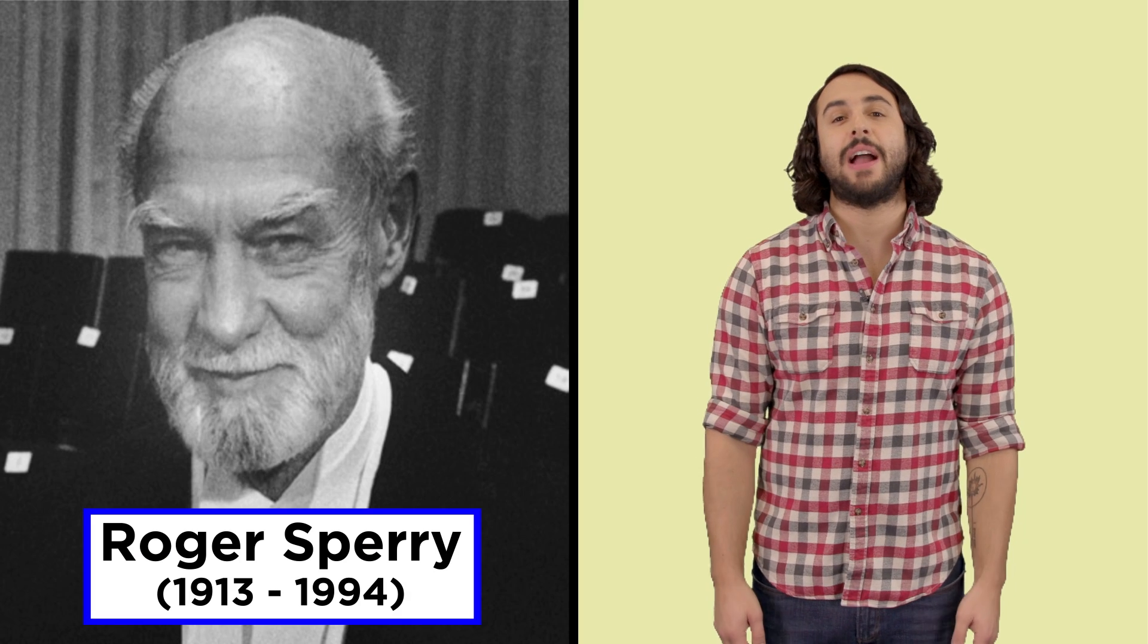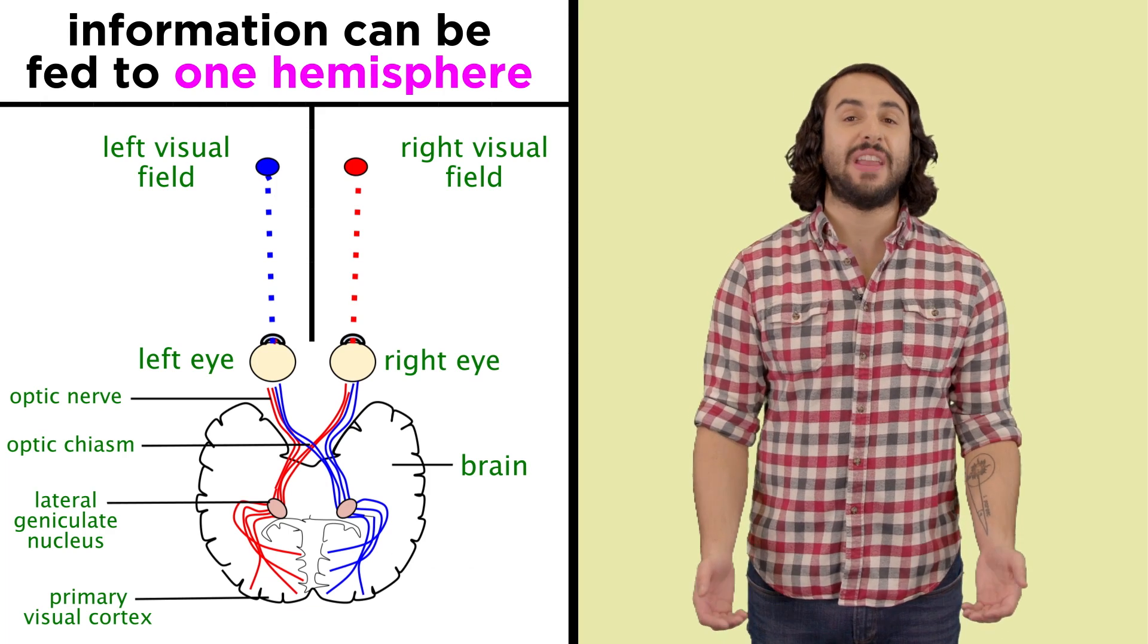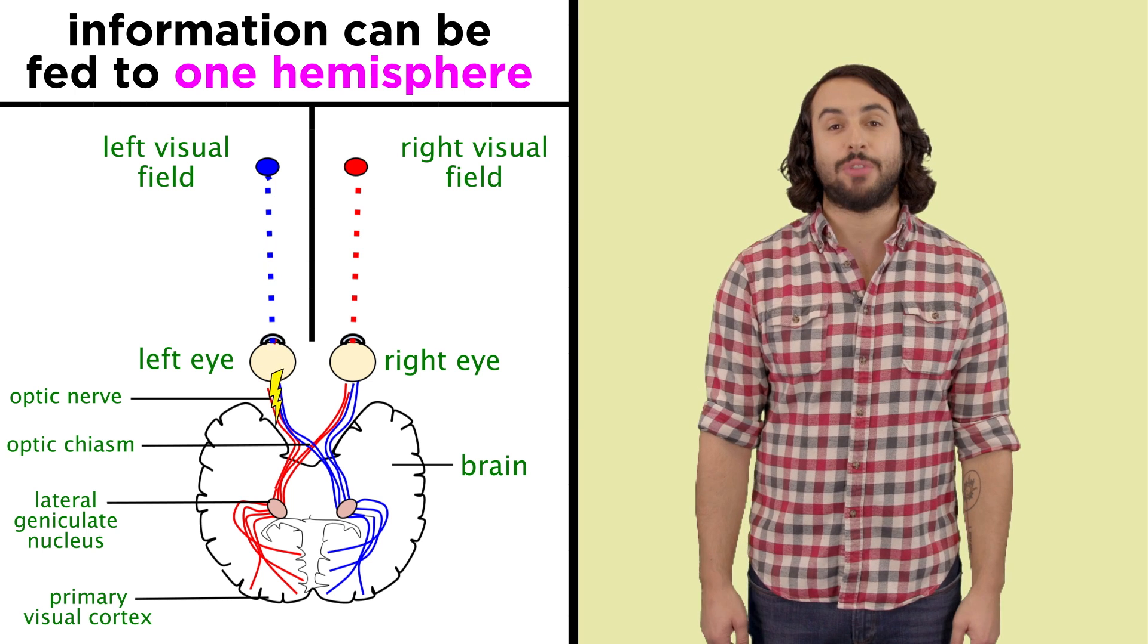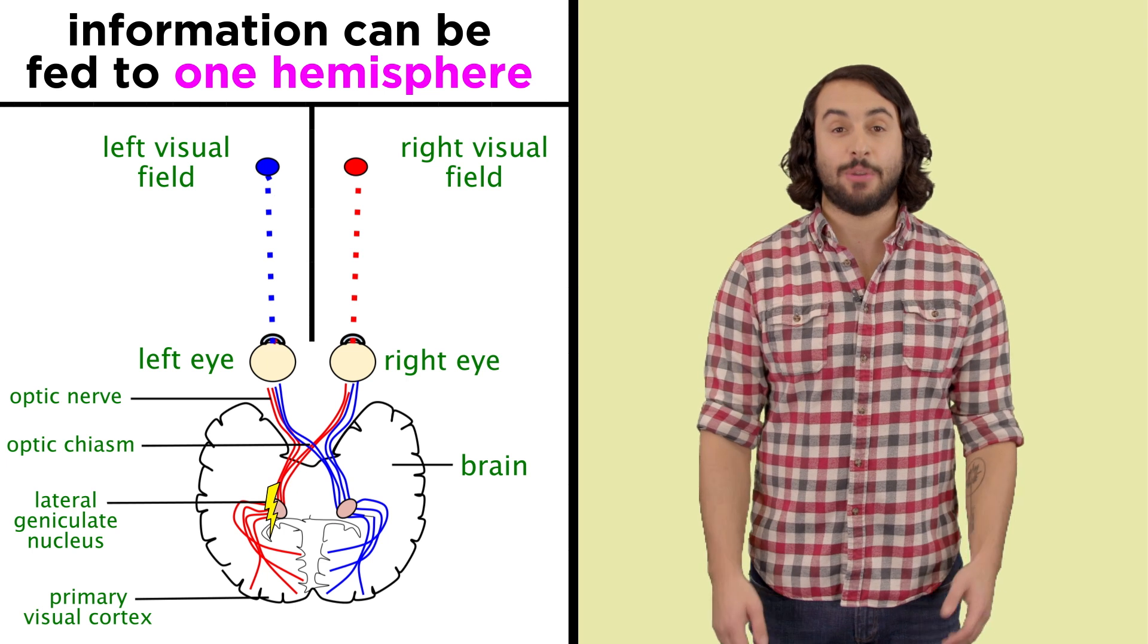These experiments, performed by Nobel laureate Roger Sperry, found clever ways of feeding information to only one side of the body, and therefore only the cerebral hemisphere controlling that side of the body.